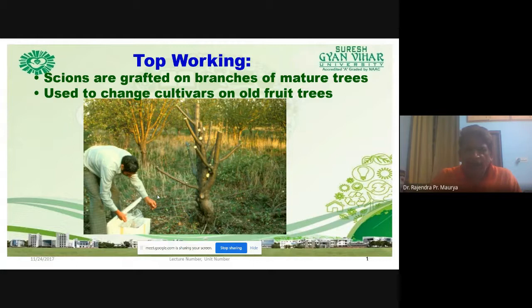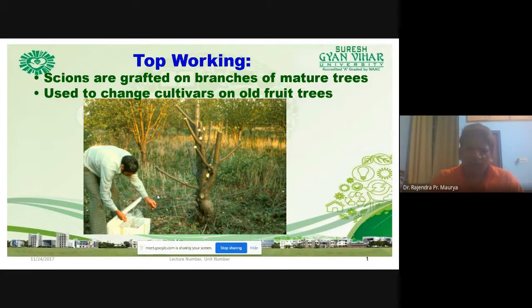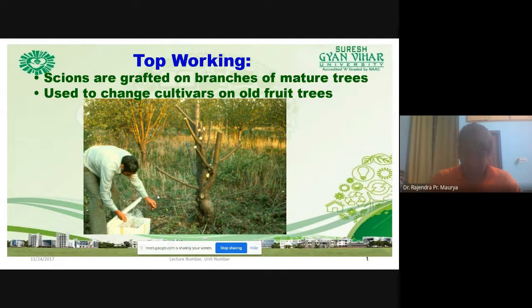Today I am going to discuss top working and double working. First, we will discuss top working, but before that we must know about budding and grafting. In vegetative propagation, cutting, layering, or specialized vegetative structures involve only a single plant. But in budding and grafting — also types of vegetative propagation — two genetically dissimilar plants are involved.